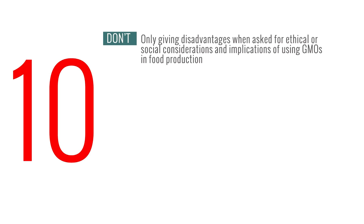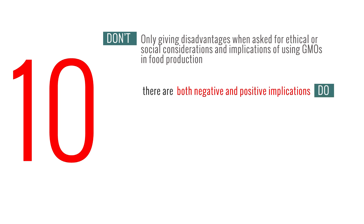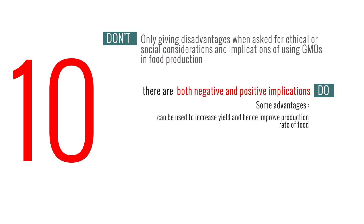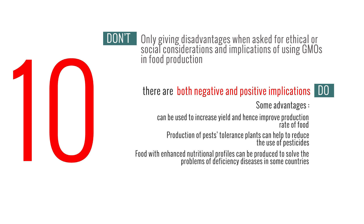Number 10: Only giving disadvantages when asked for ethical or social considerations and implications of using genetically modified organisms in food production. While there are many negative implications when it comes to GMOs, they are advantageous as well. For example, they can be used to increase yield and hence improve production rate of food. Production of pest-tolerant plants can help reduce the use of pesticide. Food with enhanced nutritional profiles can also be produced to solve problems of deficiency diseases in some countries.